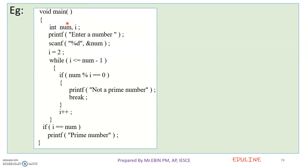We complete a program with the necessary header files. Now I am going to start with void main. What we need to do is variable declarations. The variables are n and i. We need to use two integer type variables in the program.